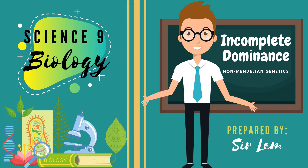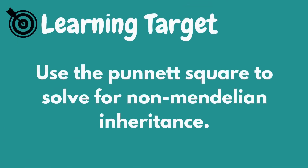But for today's topic, we will only cover incomplete dominance. At the end of this video, viewers are expected to use the Punnett square to solve for non-Mendelian inheritance.